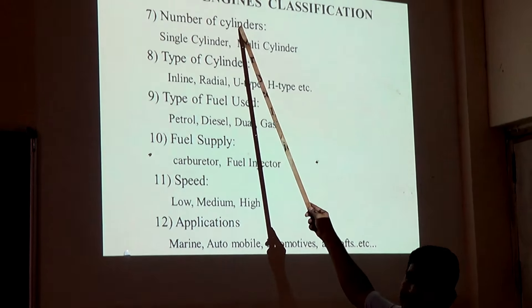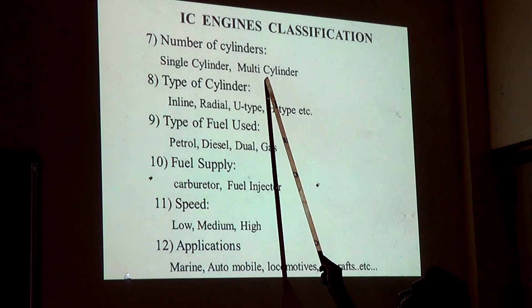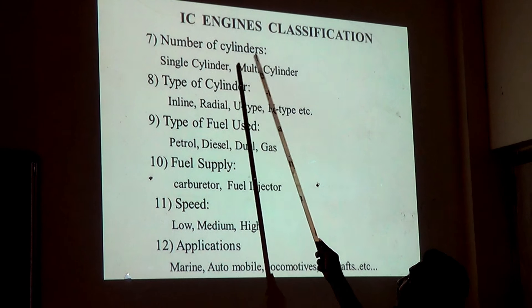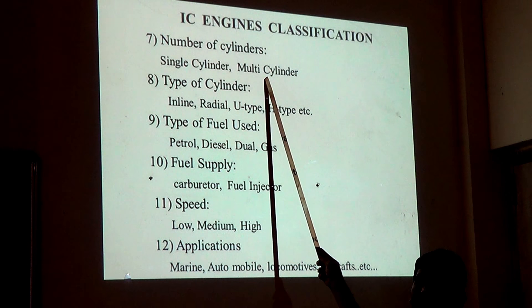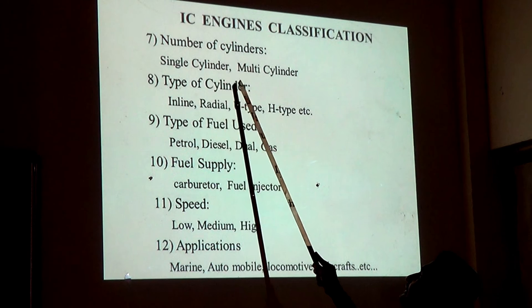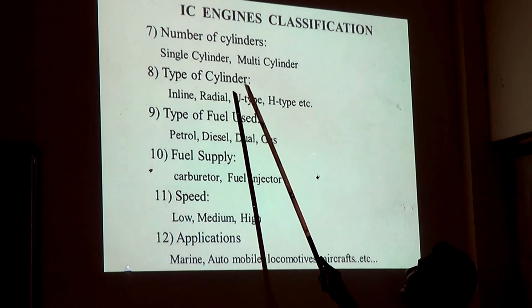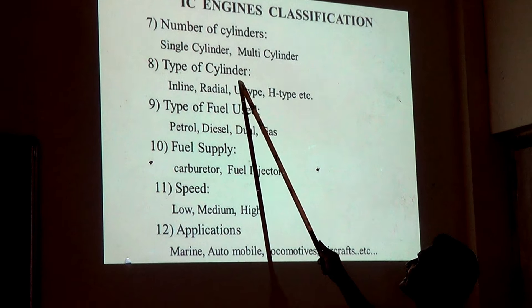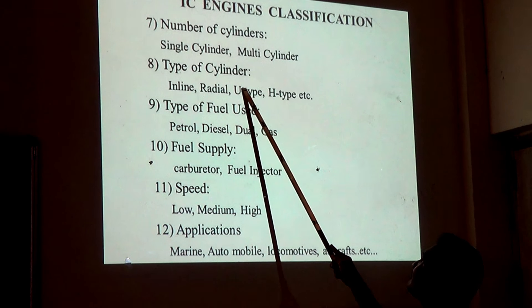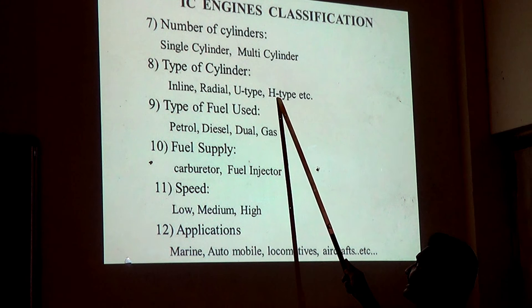The next classification is by number of cylinders: single-cylinder and multi-cylinder. If only one cylinder is present, it is called a single-cylinder engine; if more than one cylinder is used, it is called a multi-cylinder engine. Another classification is by type of cylinder arrangement: inline, radial, U-type, and H-type. In U-shape, all cylinders are arranged in a U shape; in H-shape, they are arranged in an H shape.